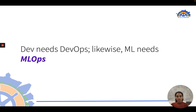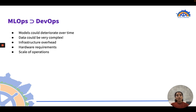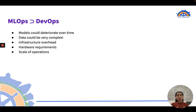Just as Dev needs DevOps, ML needs MLOps. However, MLOps is a superset of DevOps. This is because models could deteriorate over time — models and data are mutable and require constant experimentation and iteration.